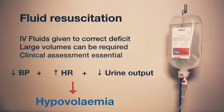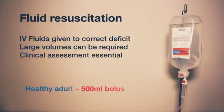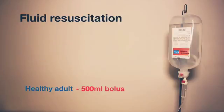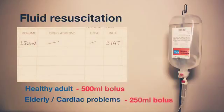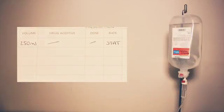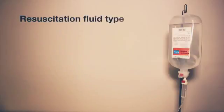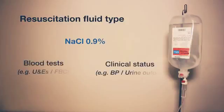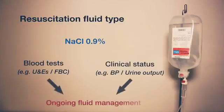Consider administering fluid boluses in volumes of about 500 millilitres to adults requiring fluid resuscitation and reassess after each bolus. For elderly patients or those with cardiac problems, proceed more cautiously by using smaller boluses of about 250 millilitres before reassessing to avoid fluid overload. The initial fluid of choice for resuscitation is typically normal saline. Ensure that bloods are sent to the lab promptly, as these, along with the patient's clinical state, will be key to guiding further fluid choice.